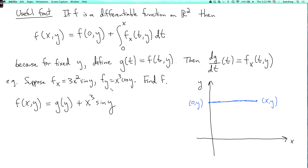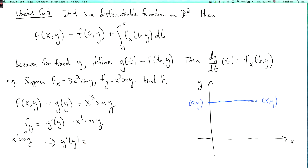Now I need to use the other equation: f_y equals x³ cos y. So I differentiate f(x, y) = x³ sin y + g(y) with respect to y and get f_y equals x³ cos y plus g'(y). On the other hand, I'm given that f_y equals x³ cos y. So x³ cos y equals g'(y) plus x³ cos y, which implies g'(y) equals 0. So g(y) is a constant c, and therefore f(x, y) equals x³ sin y plus a constant. This is how we find the potential by first integrating out x and then integrating out y.